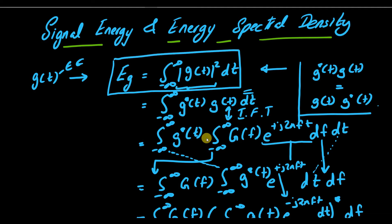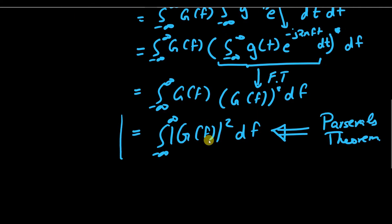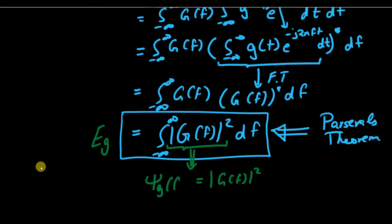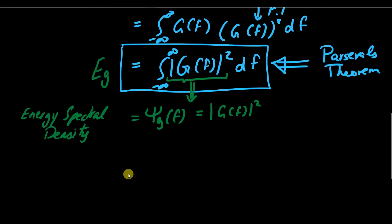With this proof of Parseval's theorem, we have two ways to find the energy of a given signal. In the second form, the quantity inside the integration — |G(f)|² — is referred to as Φ_G(f), which is the energy spectral density. It represents the spectrum squared and plotted as a function of frequency.